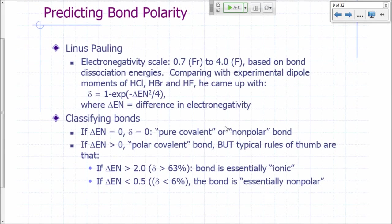So how do we predict bond polarity? If you recall, ionization energy increases left to right across a row in your periodic table, and so does electron affinity.